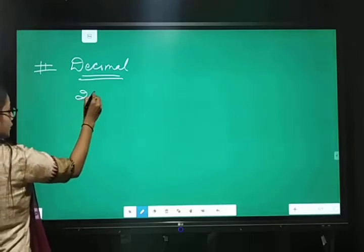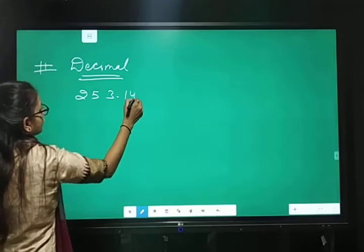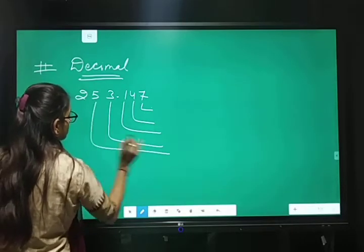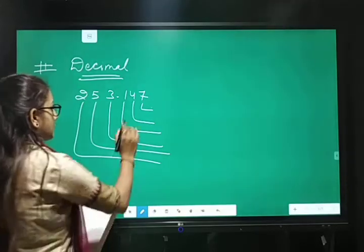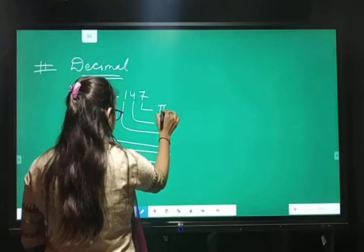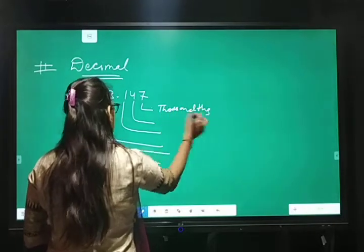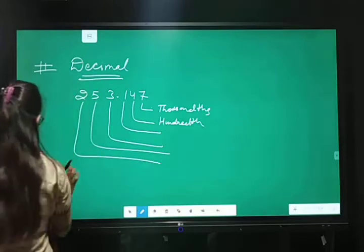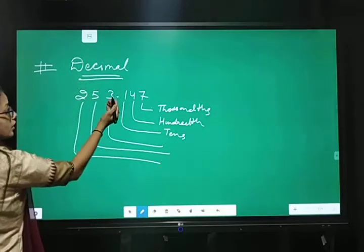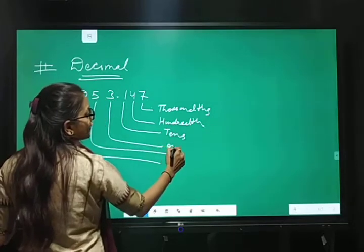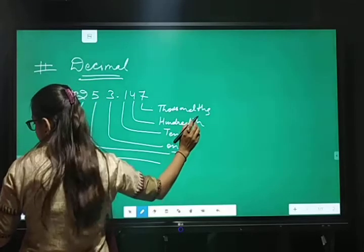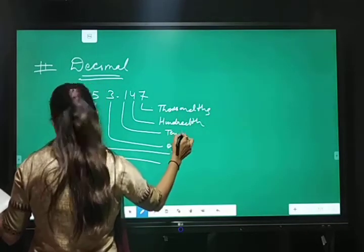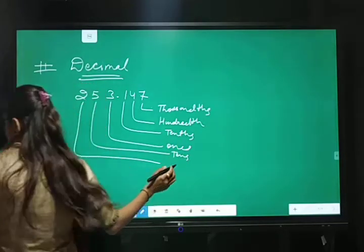Place value 253.147. First place value is 1000. Second is 100. Tens. Okay? Point ke left side mein first place value 1s, 10th, 10s, 1s, 10s and 100.